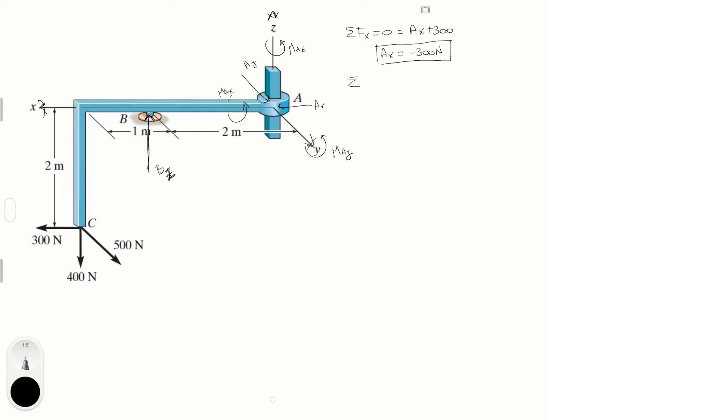Sum of the forces in the Y is equal to zero: AY plus 500 equals zero, so AY equals minus 500 newtons.